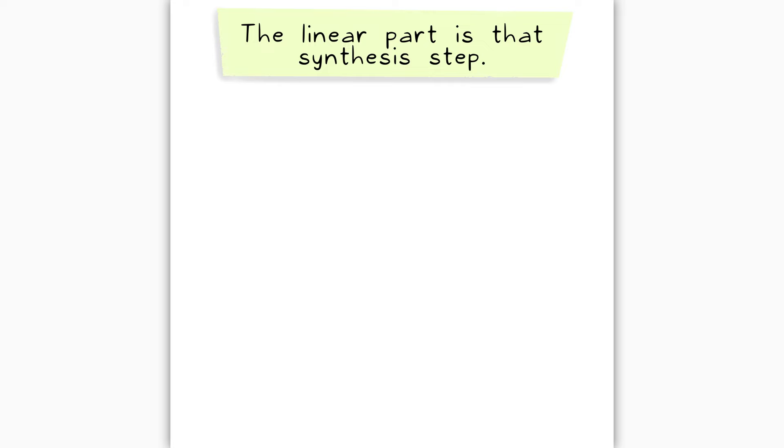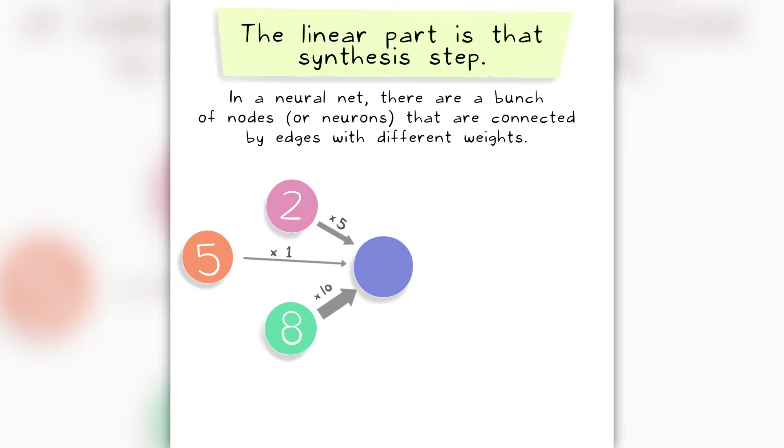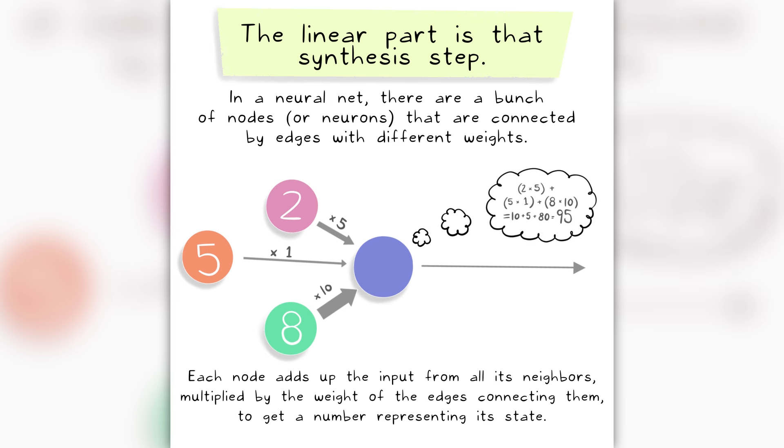The linear part is that synthesis step. In a neural net, there are a bunch of nodes or neurons that are connected by edges with different weights. Each node adds up the input from all its neighbors, multiplied by the weight of the edges connecting them, to get a number representing its state.